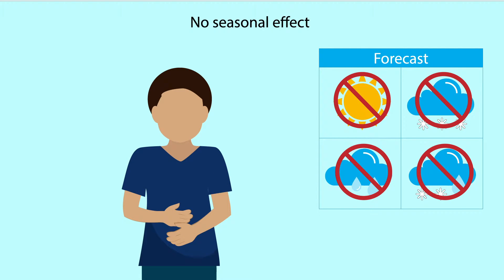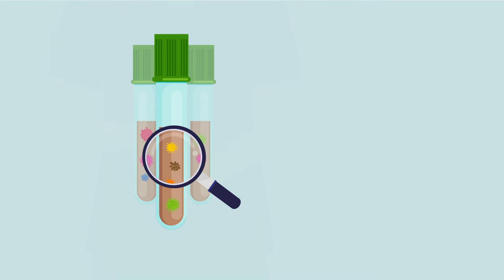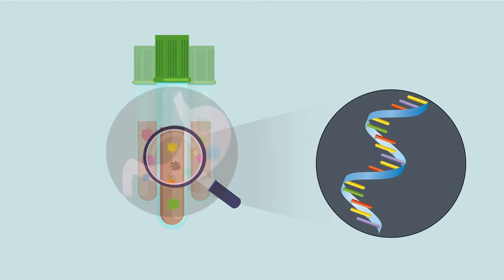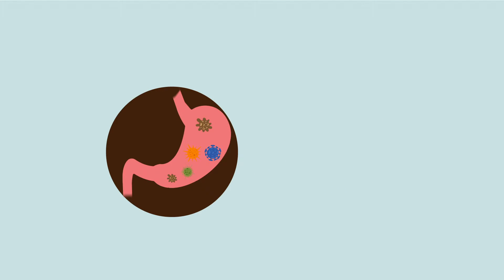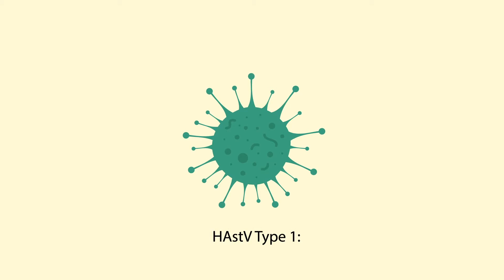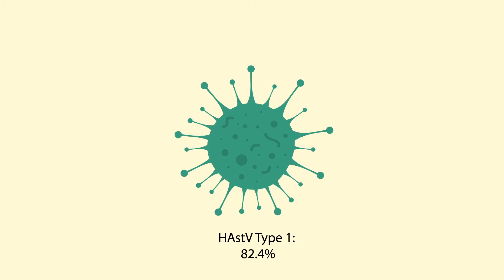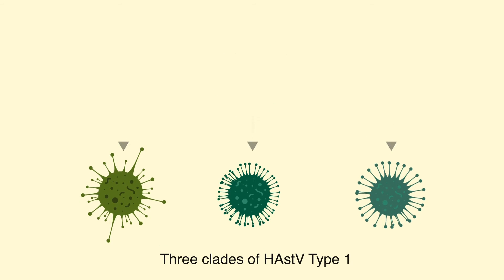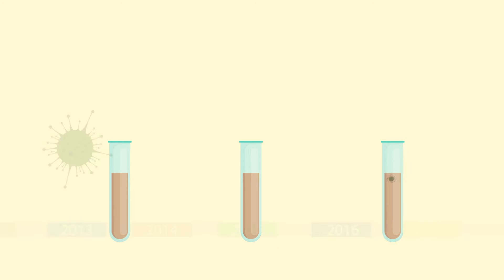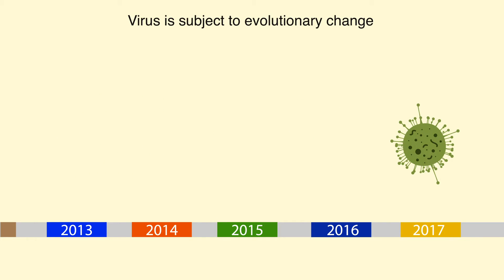No seasonal effect was detected. Human astrovirus-positive samples were then subjected to a genotyping process to determine the rate of incidence of the various human astrovirus strains. Human astrovirus type 1 was by far the most prevalent at 82.4%. Furthermore, three distinct clades of human astrovirus type 1 were identified according to collection time, suggesting that the virus is subject to evolutionary change.